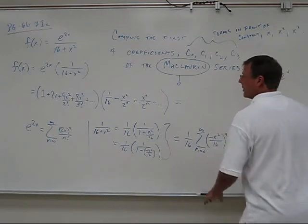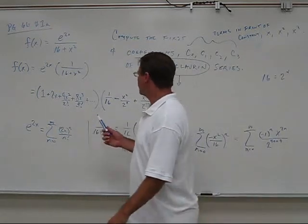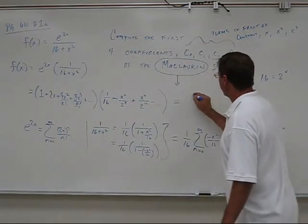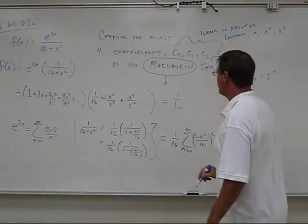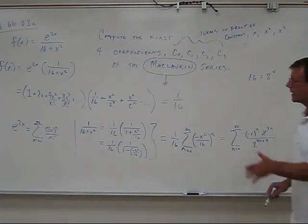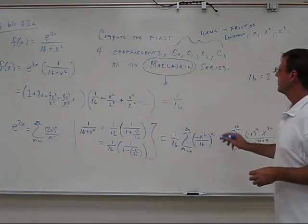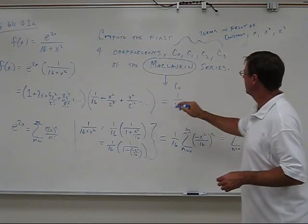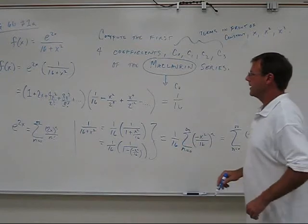What is it I get? What's my constant term? The only way to get a constant term is to take the constant times the constant. So, I get 1 over 16 as my first term. I'm going to get a lot of stuff here, but I'm really only interested in the first few terms. So this here is my C0.